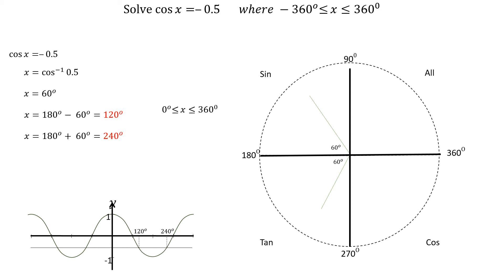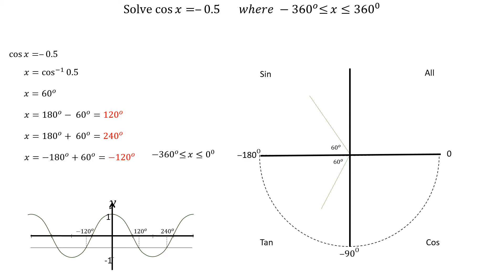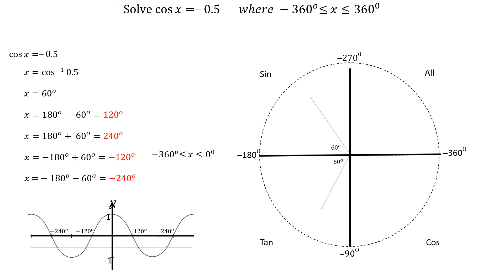Going in a clockwise direction from 0, we will find the solutions between 0 degrees and minus 360 degrees. The first angle is at minus 180 plus 60 degrees, which is minus 120 degrees. And the last angle is at minus 180 minus 60 degrees, which is minus 240 degrees.